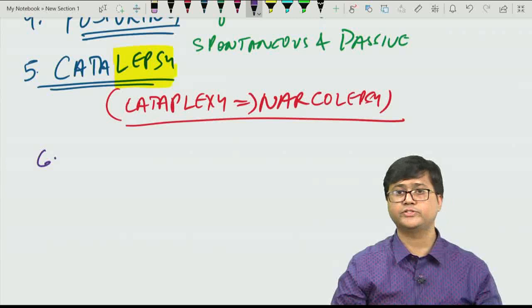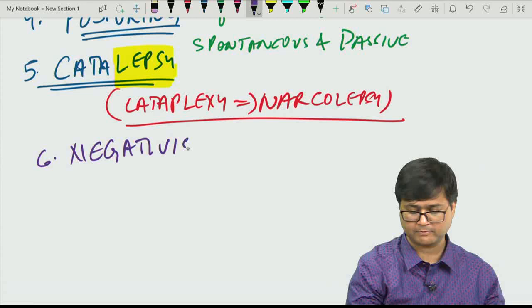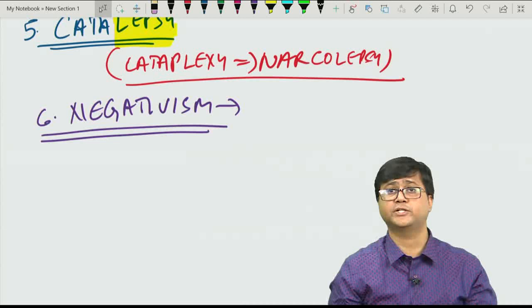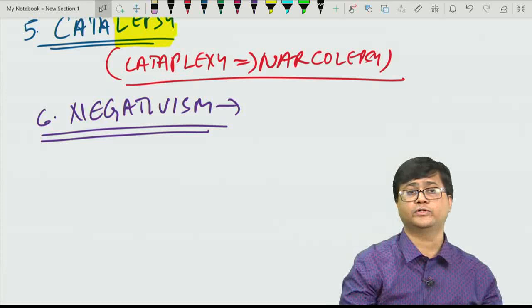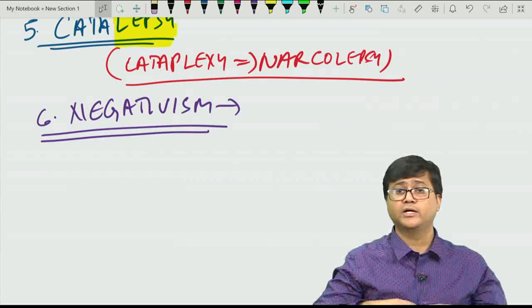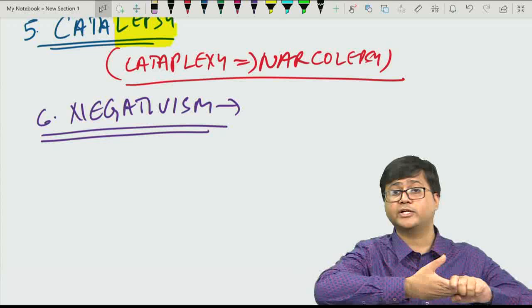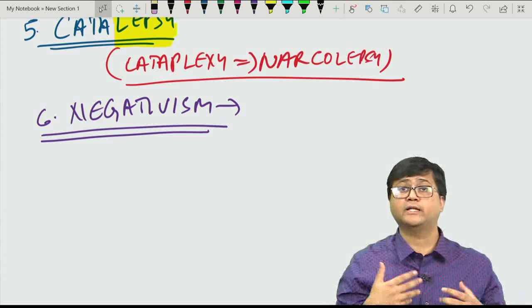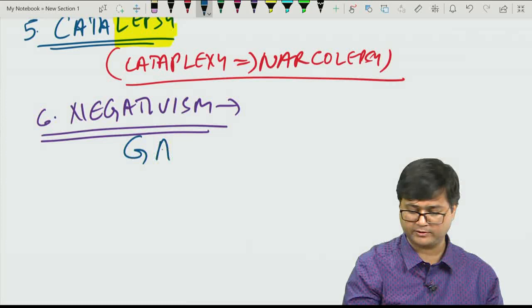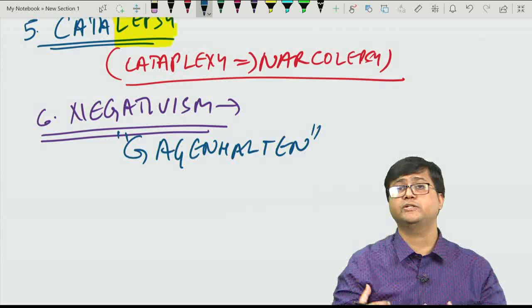The sixth feature is negativism — the person resists or does the opposite of what they are told. For example, if asked to come forward, they go backwards. This resistance may match or exceed the examiner's force. When negativism becomes extreme, it is known as Gegenhalten.